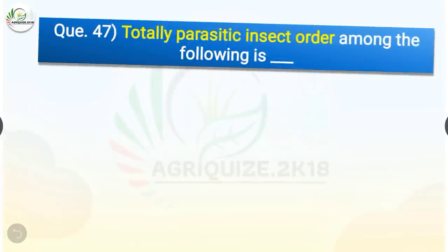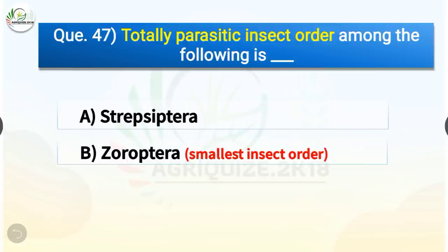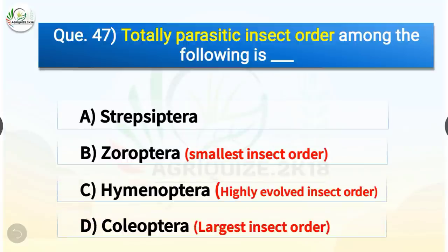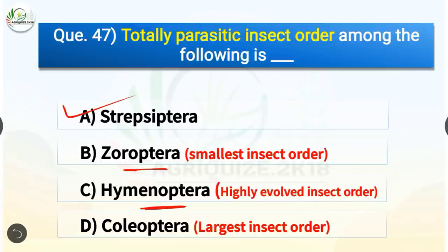Question number 47. Totally parasitic insect order among the following is which? The options are Strepsiptera, Zoraptera, Hymenoptera, or Coleoptera. The correct answer is option A, Strepsiptera. Totally parasitic insect order is Strepsiptera. Zoraptera is the smallest insect order. The highly evolved insect order is Hymenoptera, and the largest insect order is Coleoptera.